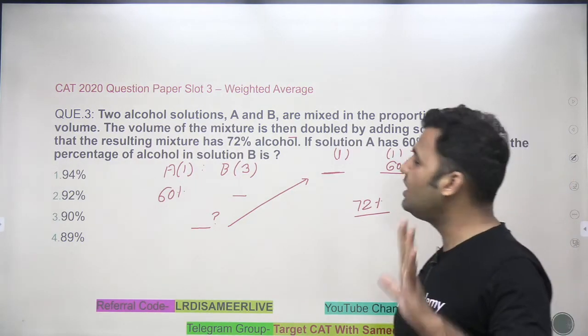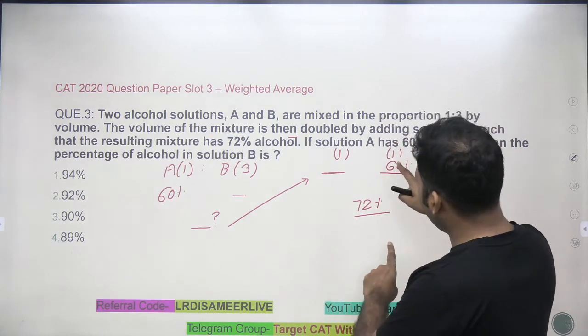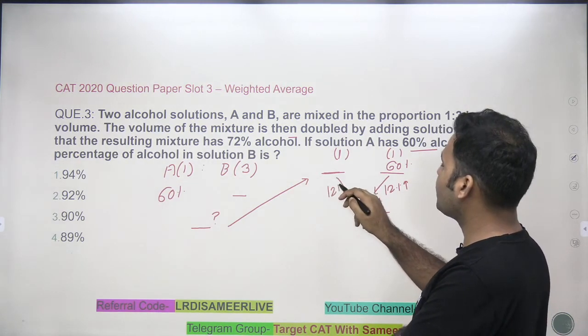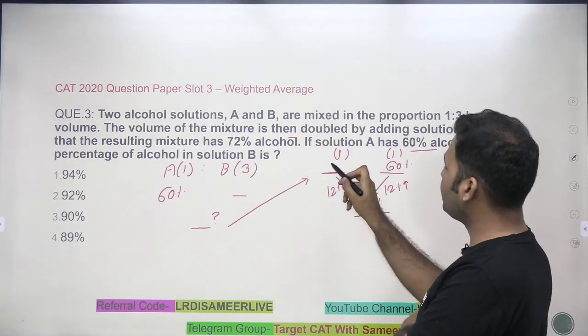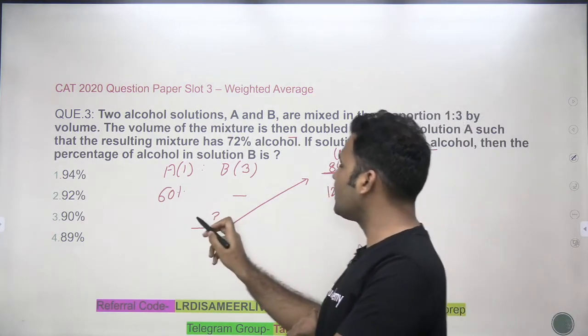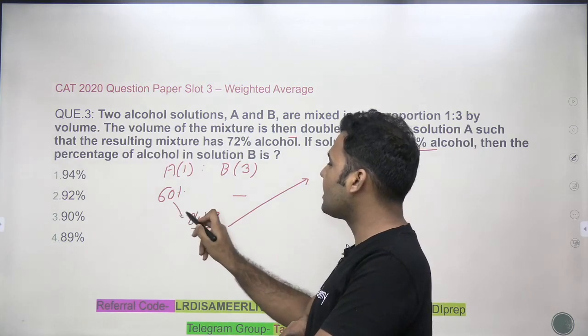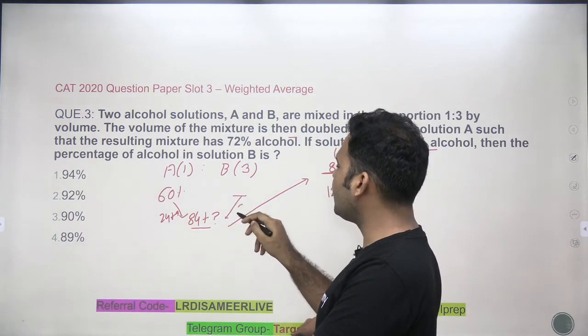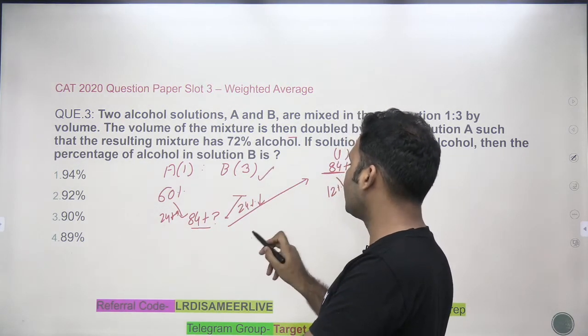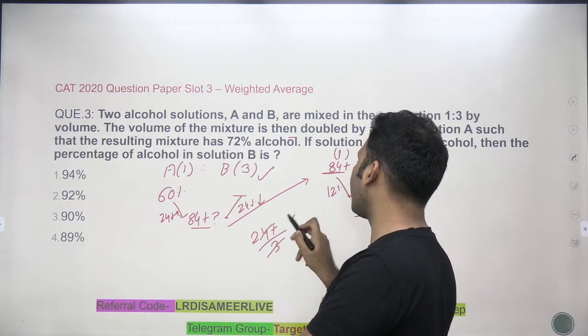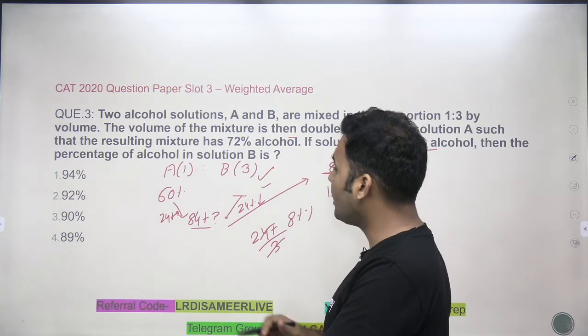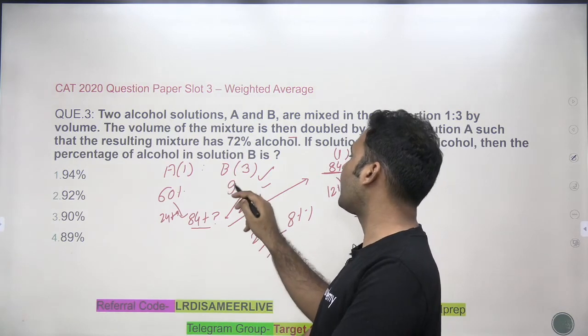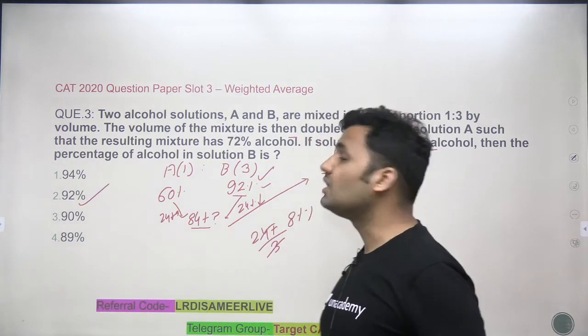This is the whole question and we are supposed to tell that how much alcohol is in B. You see that there is a solution of only 30 seconds. I have 60% here and 72% here. That means this is getting increased by 12%. So that means this has to get decreased by 12%. Now after decreasing it by 12%, I need 72%, so this must be 84%. And this is 84% over here. Now you see that this is getting increased by 24%. And 24% is increased in 1 unit. So there must be a decrease of 24% in 3 units. So in every unit, there would be a decrease of 8%. A decrease of 8% over here means after decreasing it by 8%, I need 84%. So that means in solution B, it should be 92% alcohol. Option 2 is the correct answer of the question. That's the question of 2020 slot 3 weighted average.